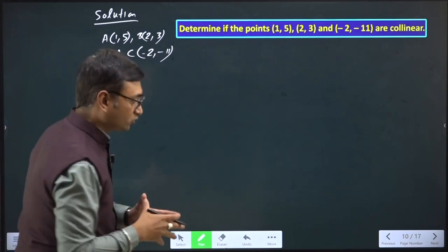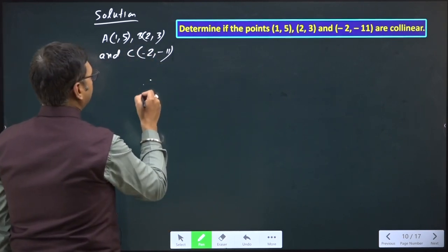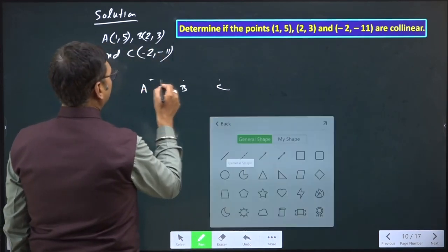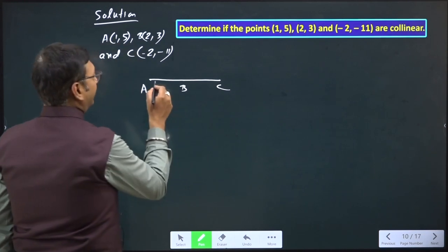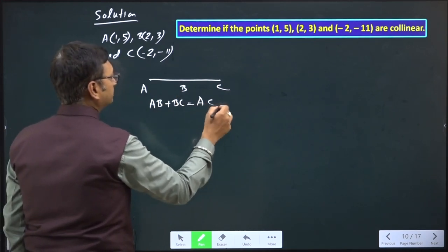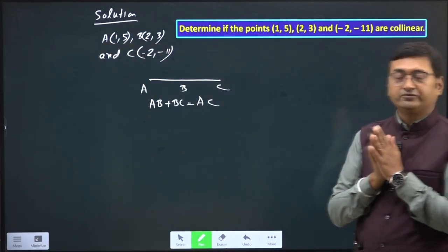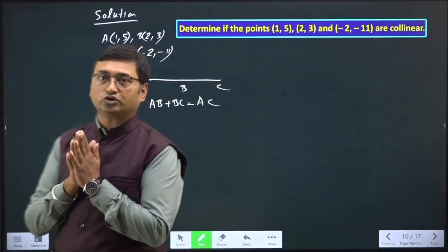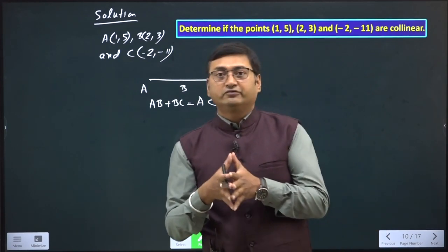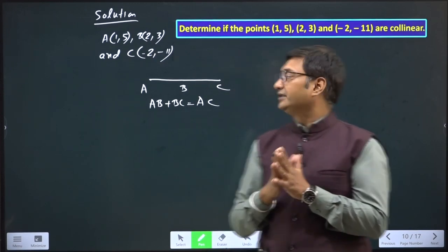If they are collinear and they lie on the same straight line, then AB + BC should be equal to AC. If we get this result, then we can say all three points are collinear. But if the sum of two sides is not equal to the third side, it means they are not collinear.